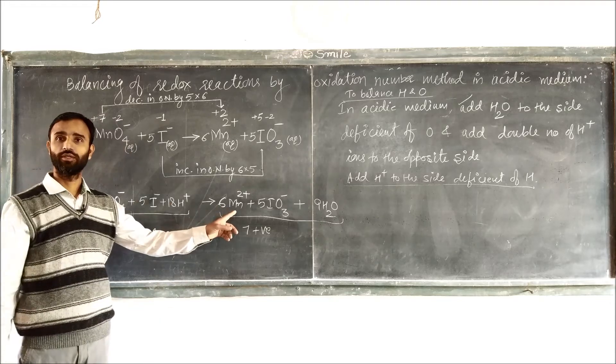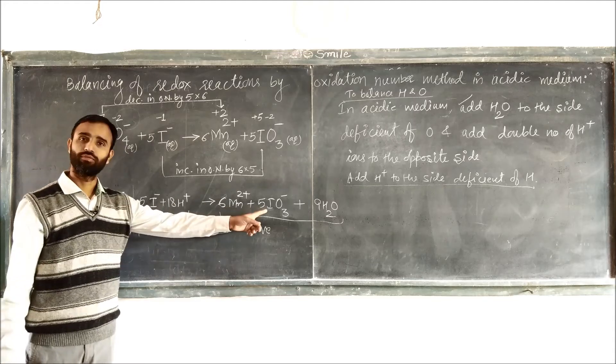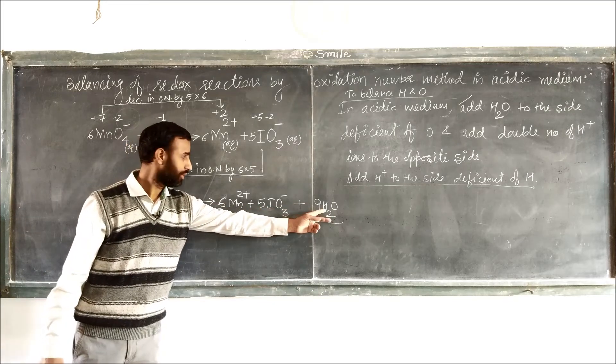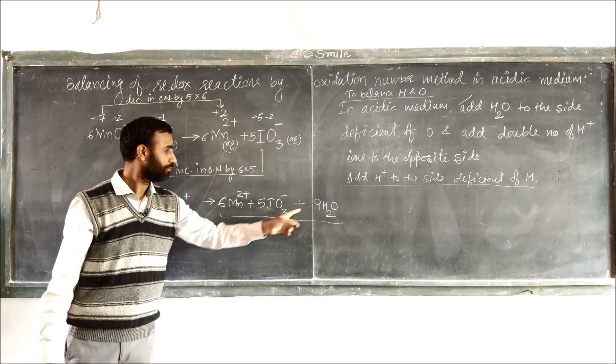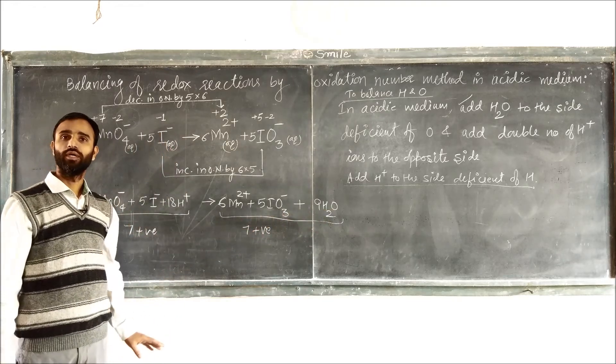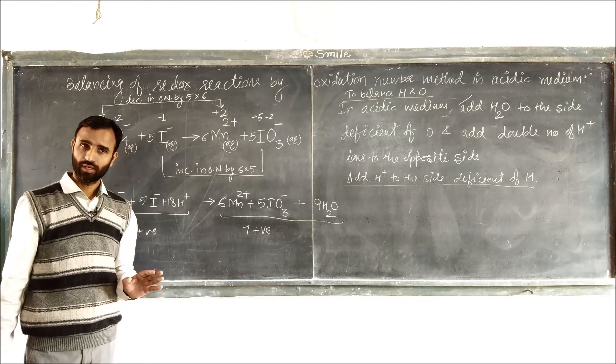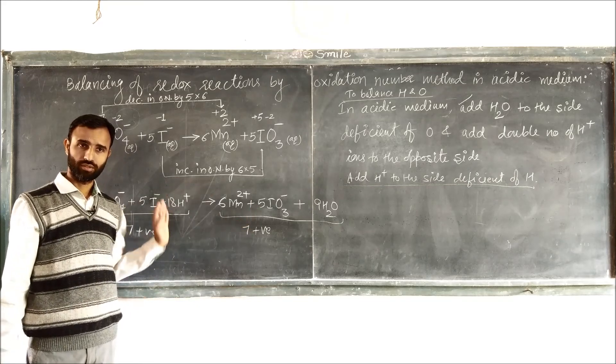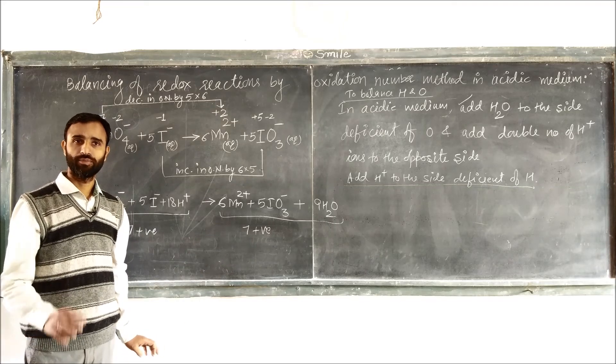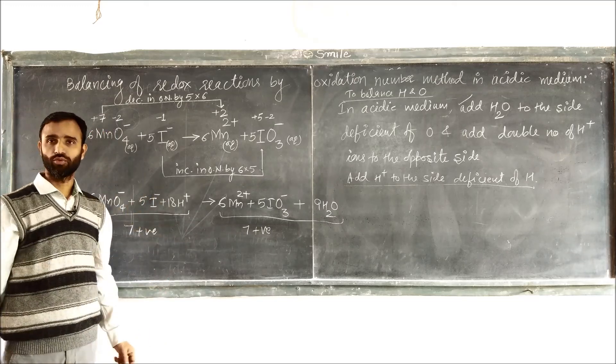6 manganese, 5 iodine, 5 iodine, 18 hydrogen, 18 hydrogen, 24 oxygen, 24 oxygen. Number of atoms of each type and charge should be same on both sides, total sum, okay. So in this way we can balance the equation.